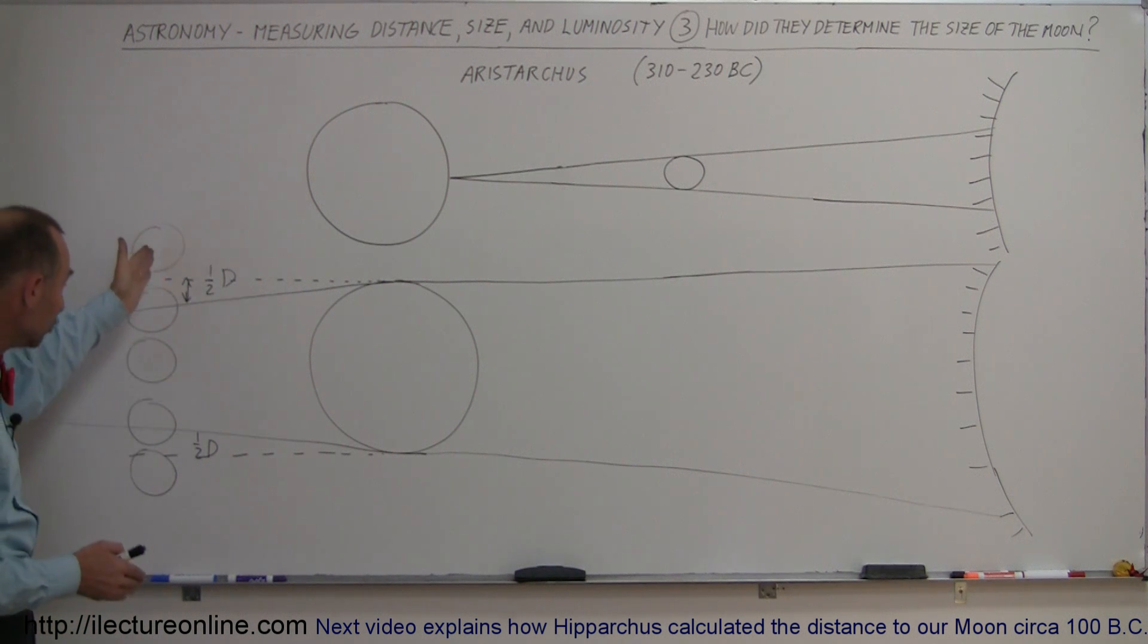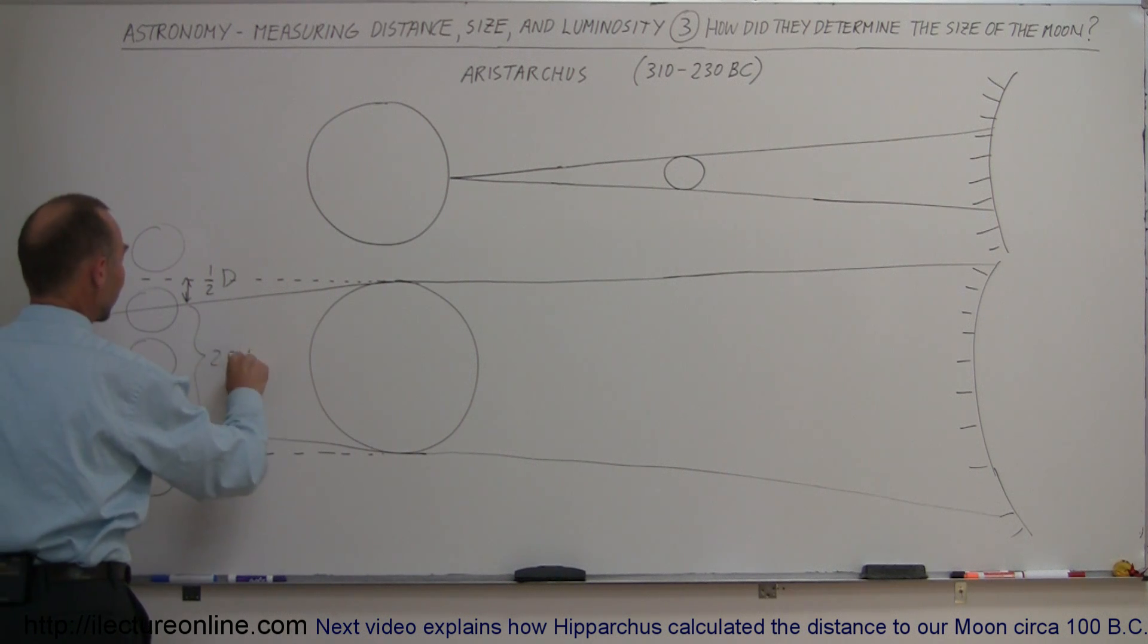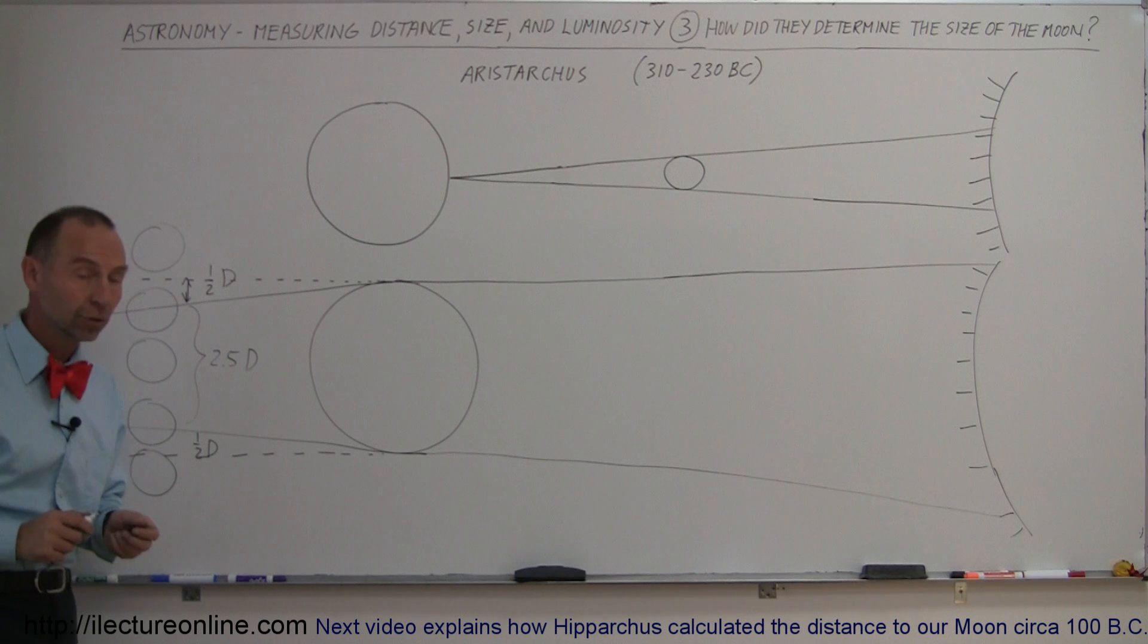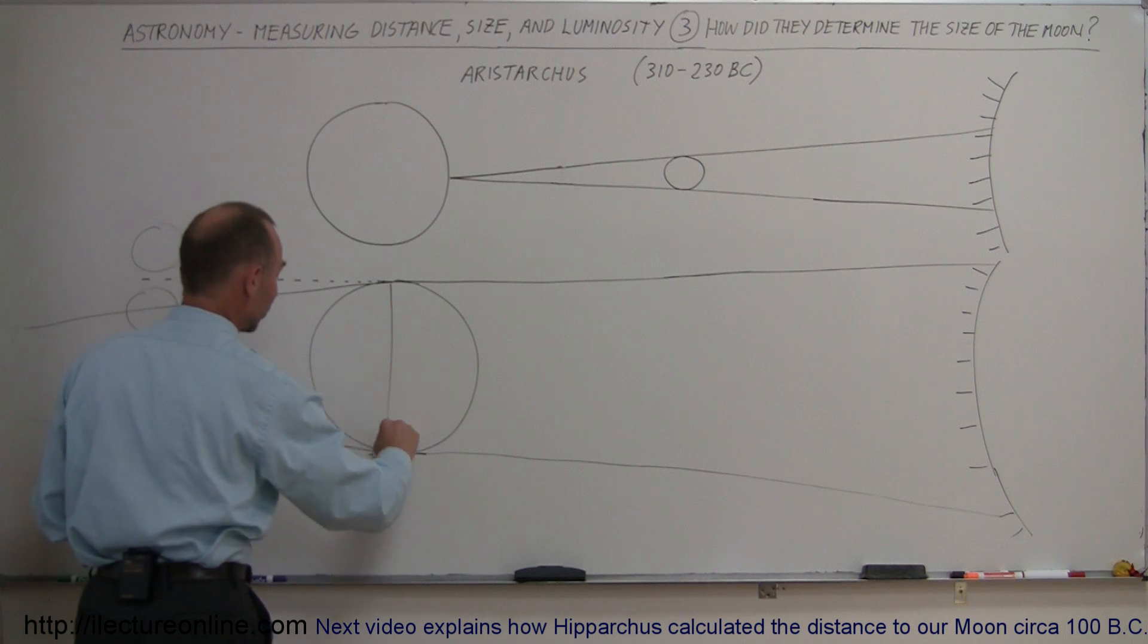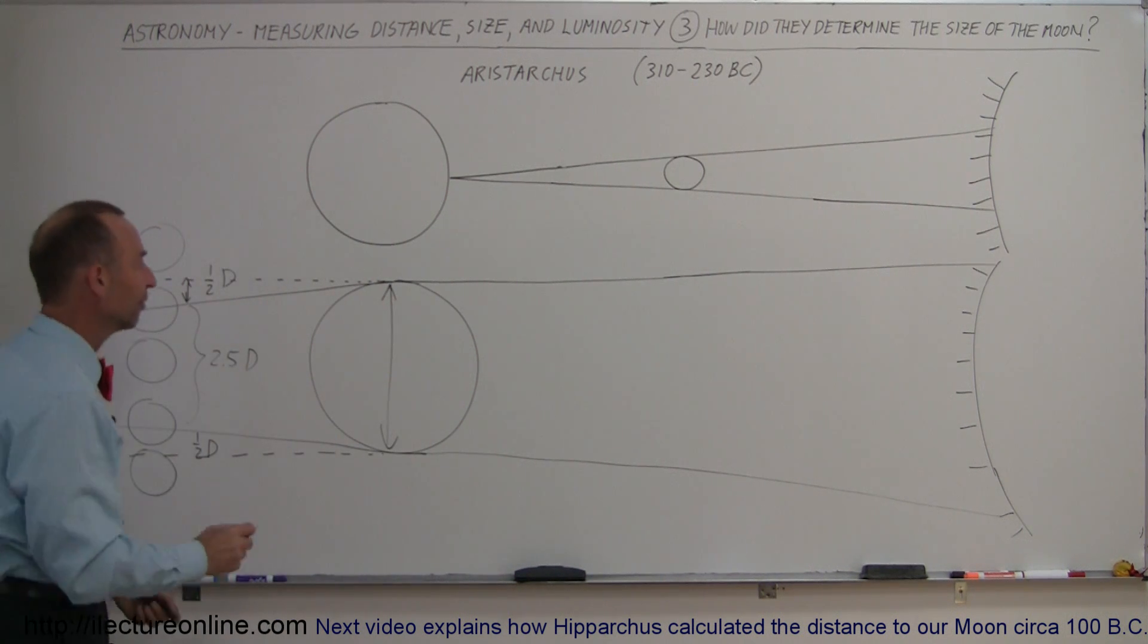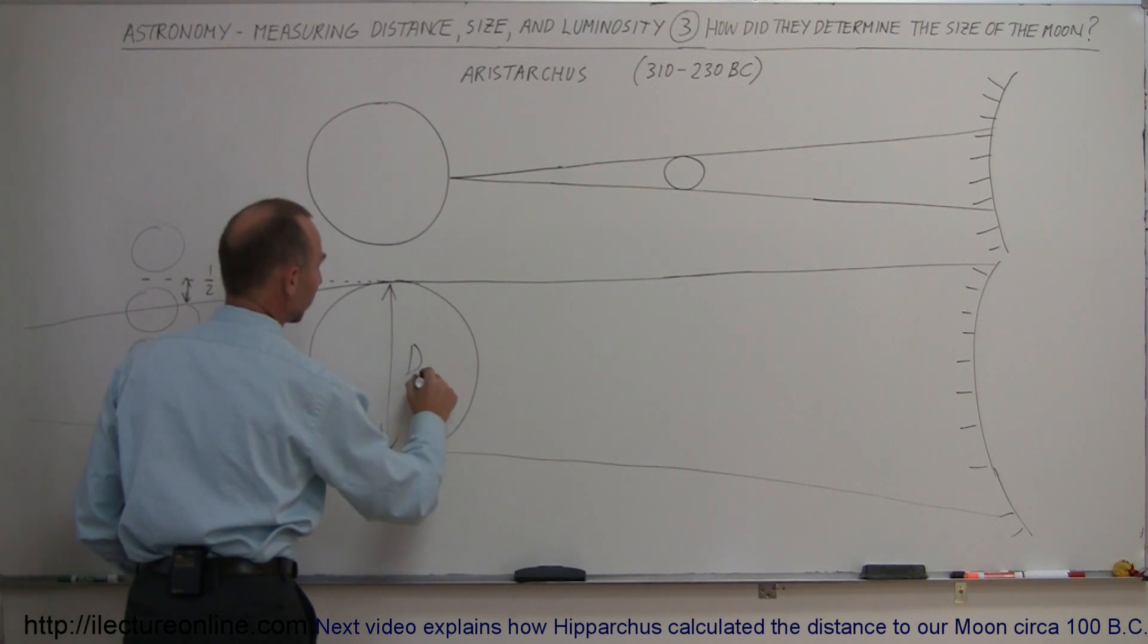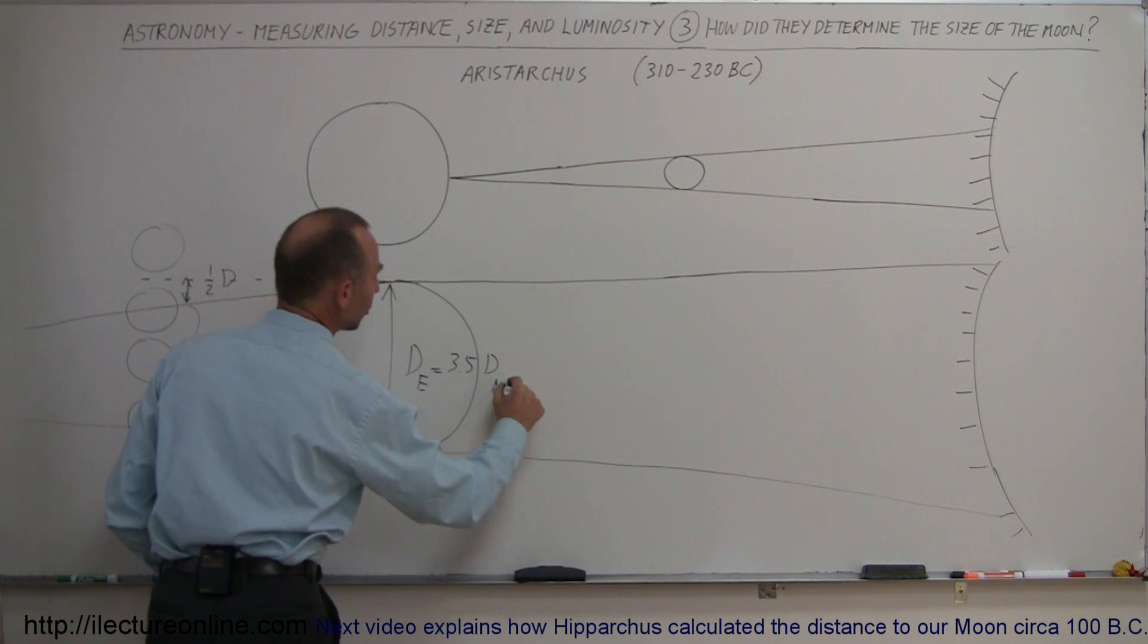And based upon the rate of the moon moving in there, they could figure out that this distance right here was about two and a half diameters of the moon. So they added everything together and they said, well that means that the Earth right there, the diameter of the Earth, therefore is equal to two and a half plus a half plus a half, or the diameter of the Earth was equal to 3.5 times the diameter of the moon.